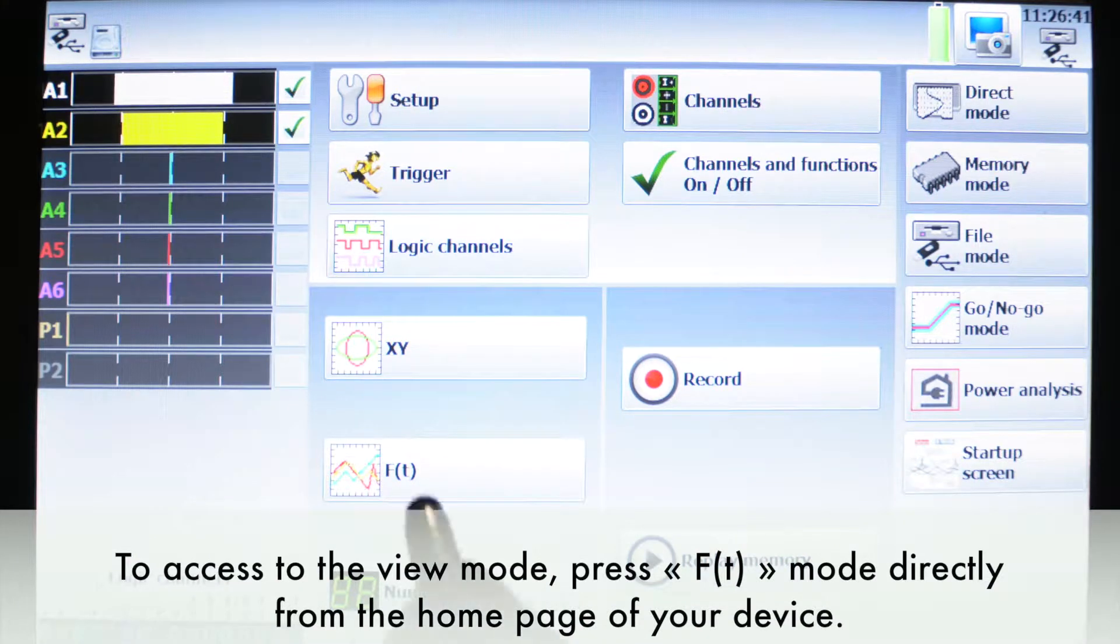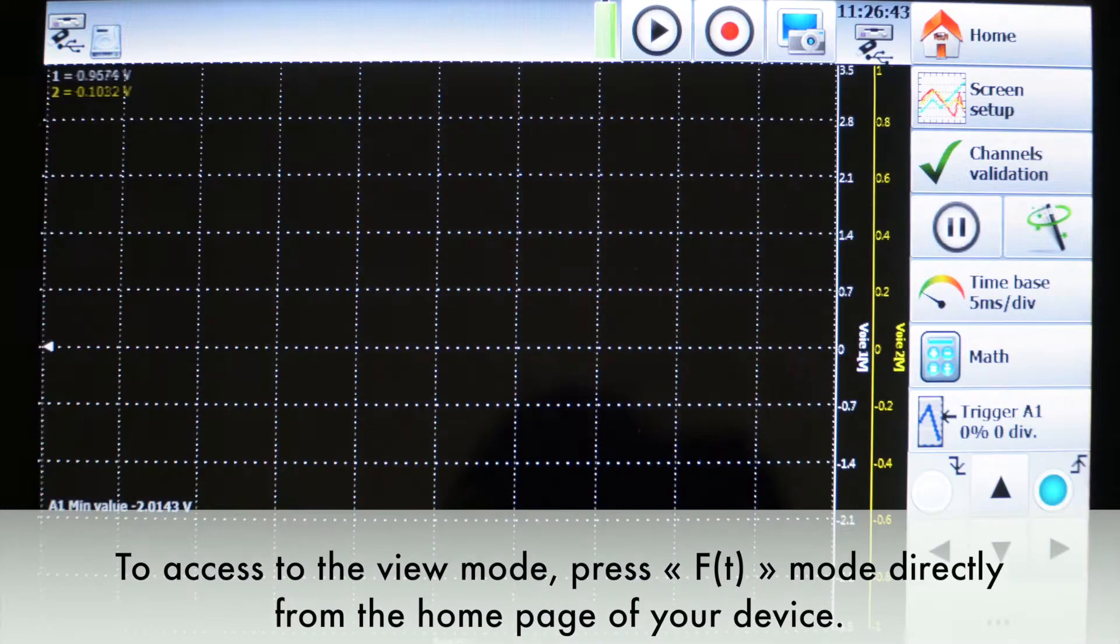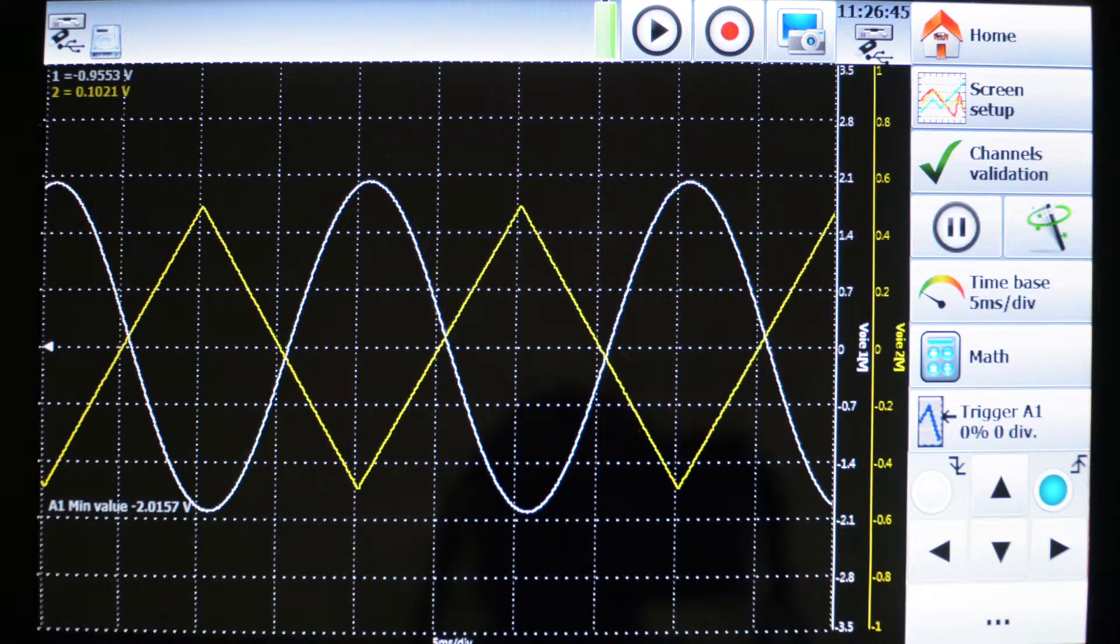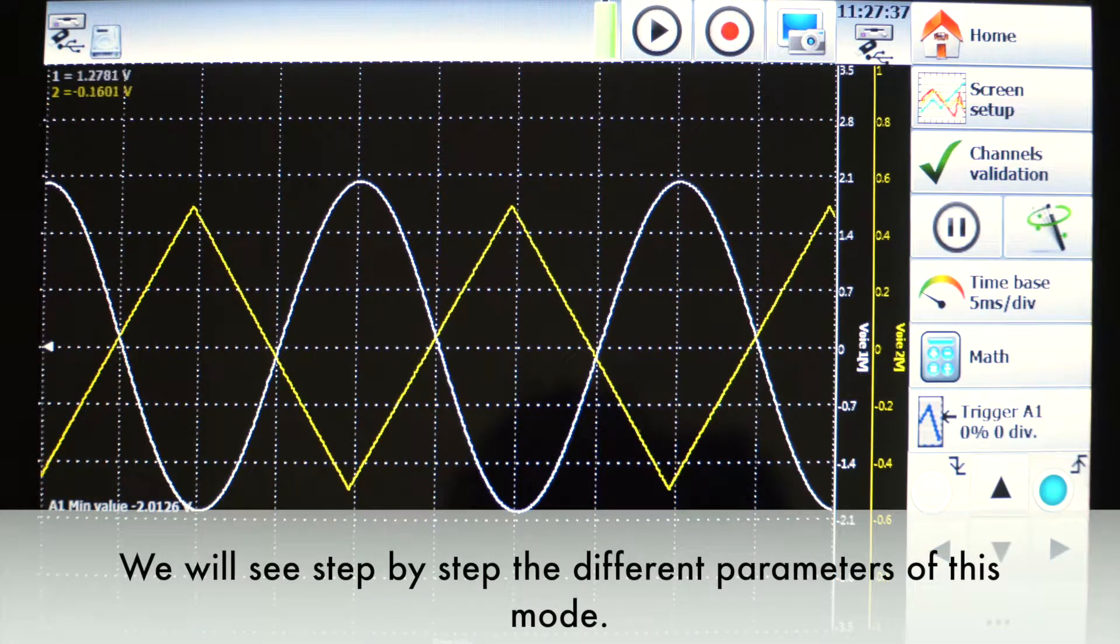To access the view mode, press FT mode directly from the home page of your device. We will see step by step the different parameters of this mode.